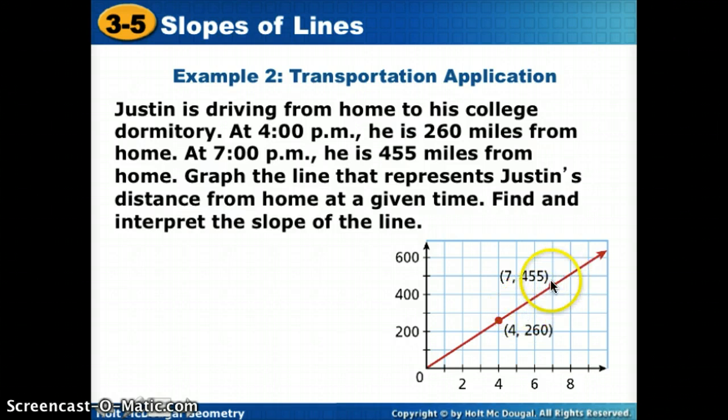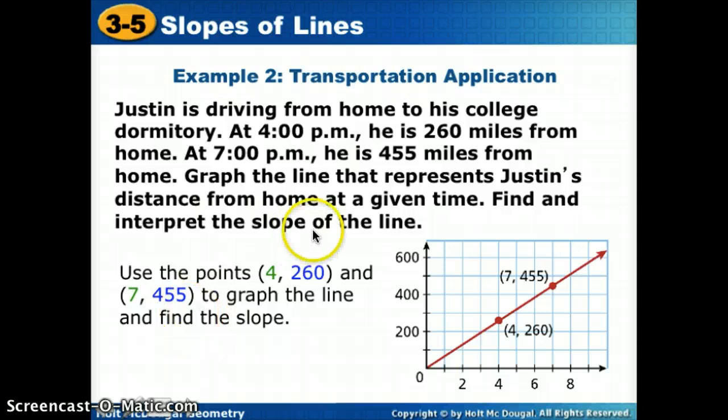we can say that at 4 o'clock he is 260 miles from home. At 7 o'clock he was 455 miles. So notice by doing so we kind of made points. So at 4 o'clock that's our x. This is how far he was. At 7 o'clock that's our x and so our y would be his distance. So if we use those points, we created a point at (4, 260) and (7, 455).